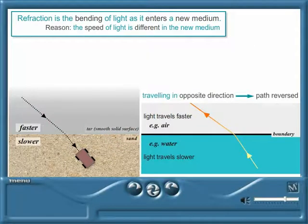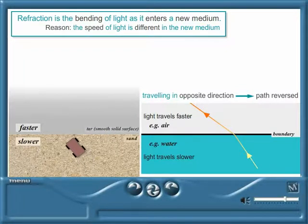If the light is travelling in the opposite direction, it simply reverses its path, just like the trolley would. Make sure you understand why.